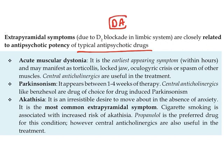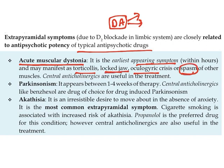Extrapyramidal side effects result from dopamine blockade and cause problems in muscle movements. The first major one is acute muscular dystonia, which appears immediately after starting the drugs. It is characterized by torticollis, locked jaw, and oculogyric crisis — rotational movements of the eyes. It is mainly due to spasm of facial muscles, and central anticholinergic drugs are used to treat it.